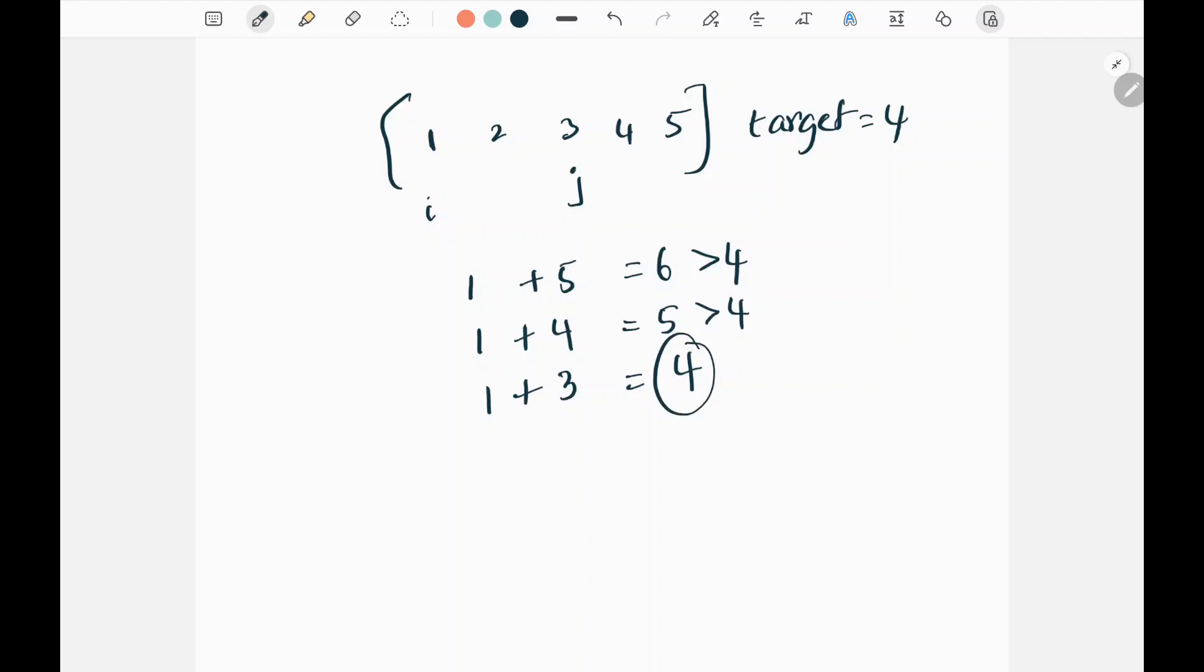Since in Python the indices will start from zero, one, two, and four, but in the question they are asking us to add one to the indices.